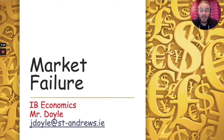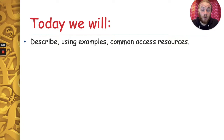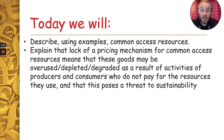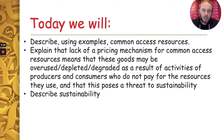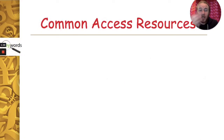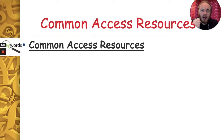Hello and welcome to this video lesson in our series on market failure for IB Economics. In this video we're going to describe what common access resources are, look at examples of them, and then look at how the lack of a pricing mechanism for common access resources means these goods can be overused and their stocks depleted. We'll also explain what sustainability is in this context.